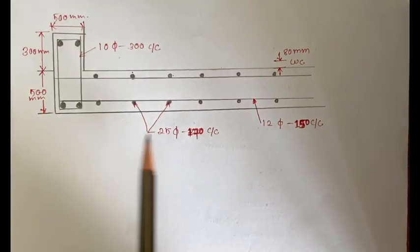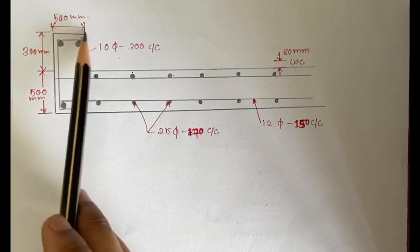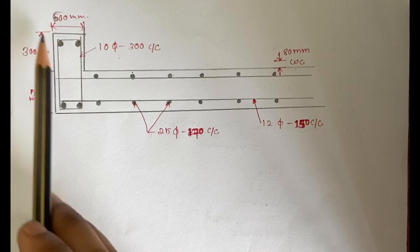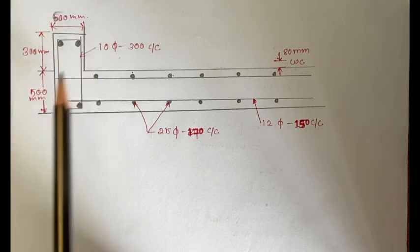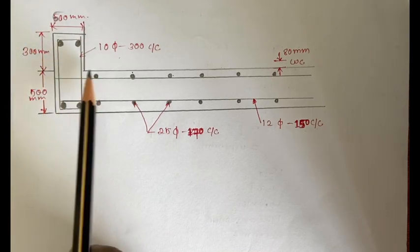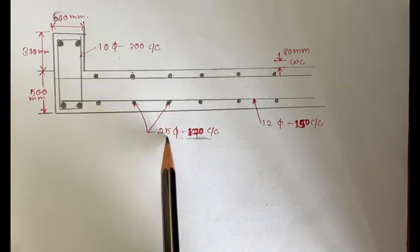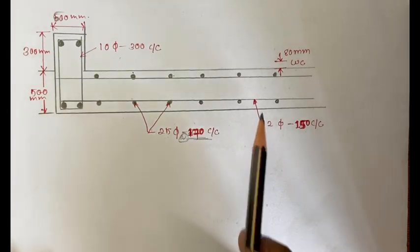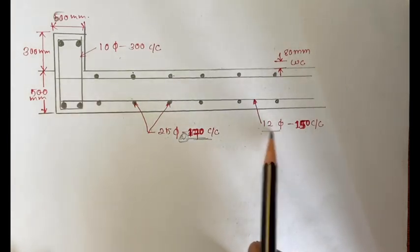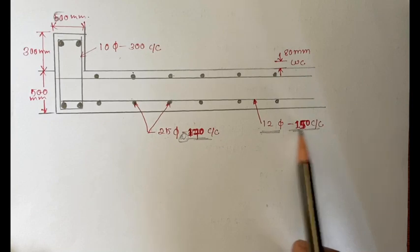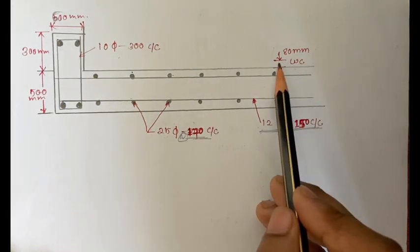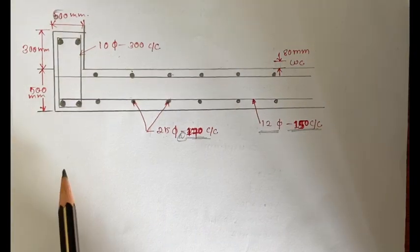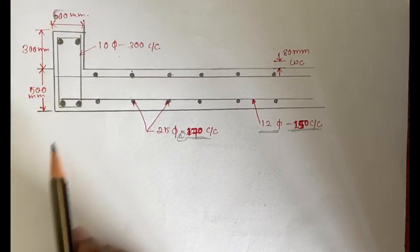This is the reinforcement detail for the slab. The kerb is 600 mm wide and 300 mm height, slab thickness is 500 mm. Main reinforcement is 25 mm diameter bars at 170 mm centre-to-centre. Distribution bars are 12 mm diameter at 150 mm centre-to-centre. Bearing coat thickness is 80 mm. This completes the design of the solid slab bridge deck.